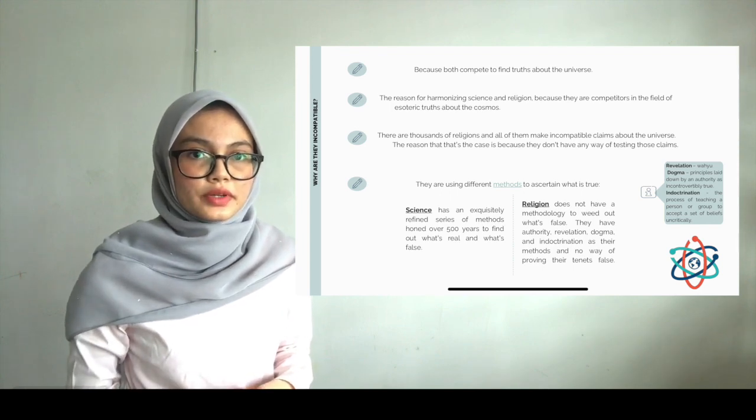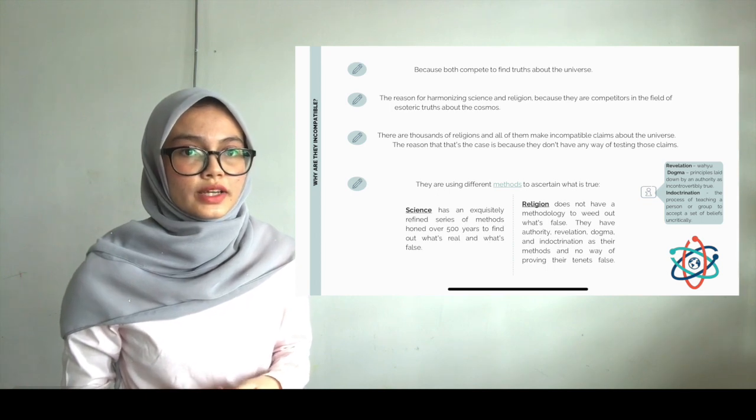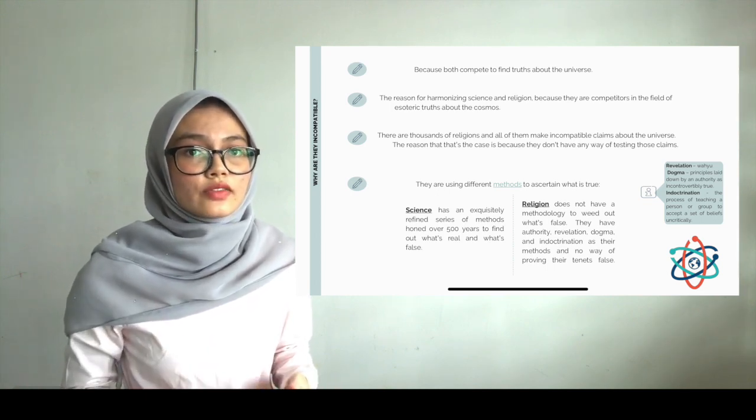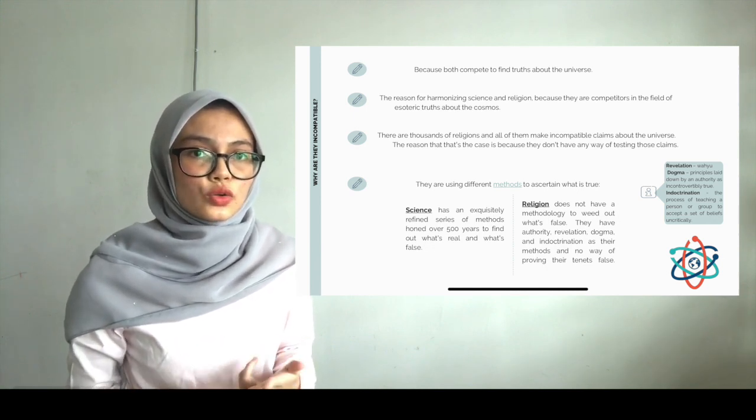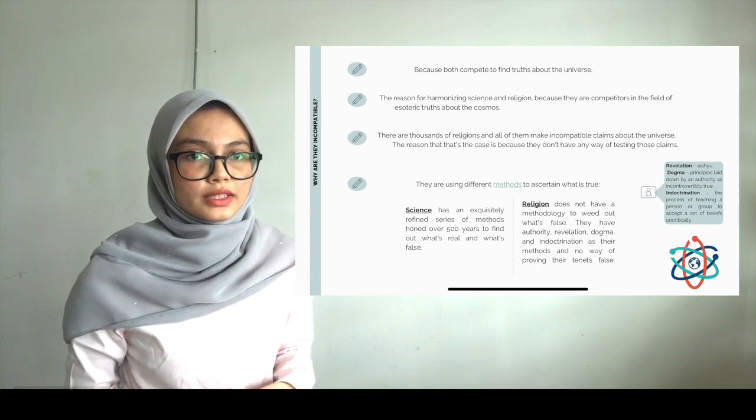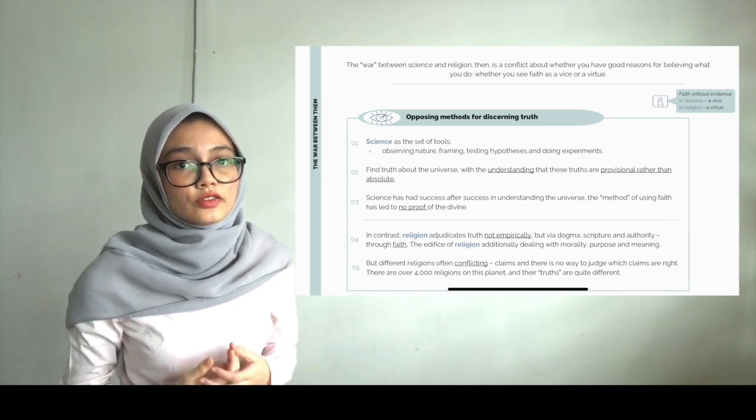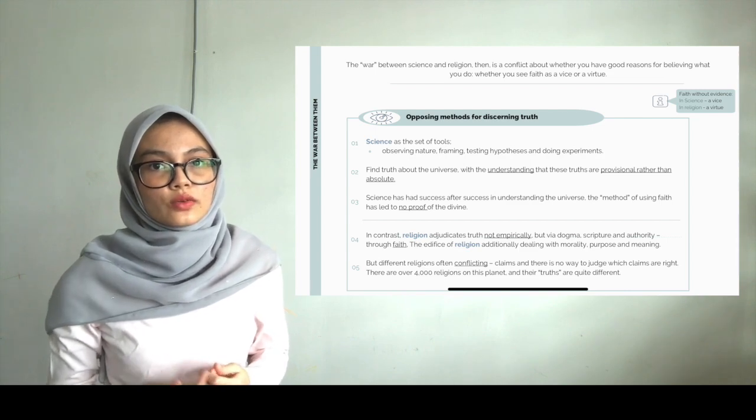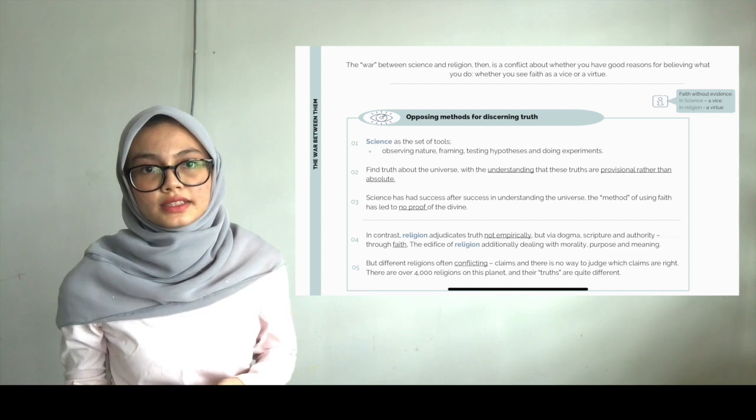They are using different methods to ascertain what is true. Science has an exquisitely refined series of methods, honed over 500 years, to find out what's real and what's false, while religion doesn't have a methodology to weed out what's false. They have authority, revelation, dogma, and indoctrination as their methods, and no way of proving that they're false. The war between science and religion is a conflict about whether you have good reasons for believing what you do, whether you see faith as a vice or a virtue.